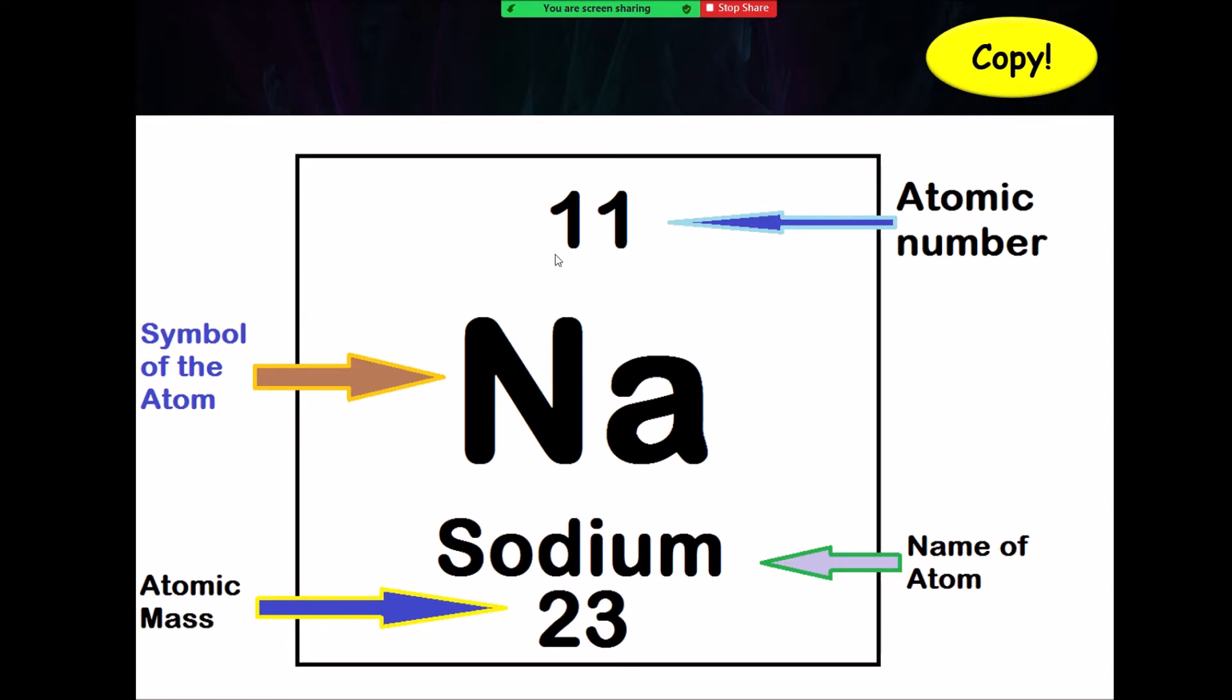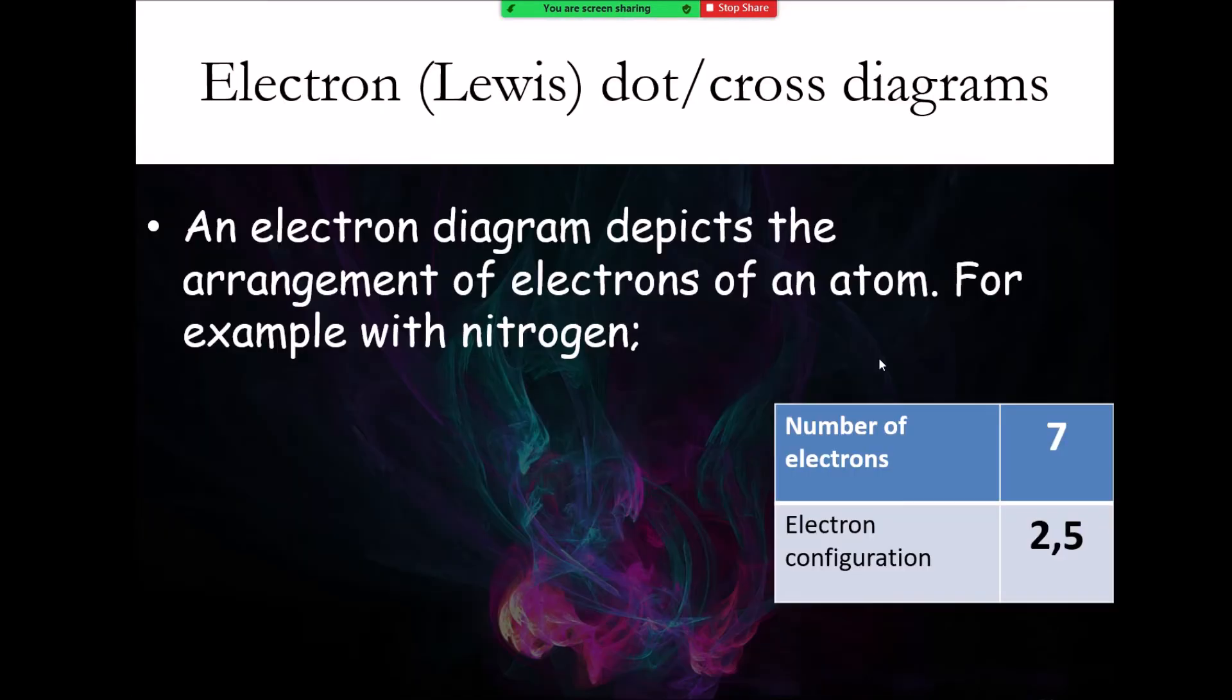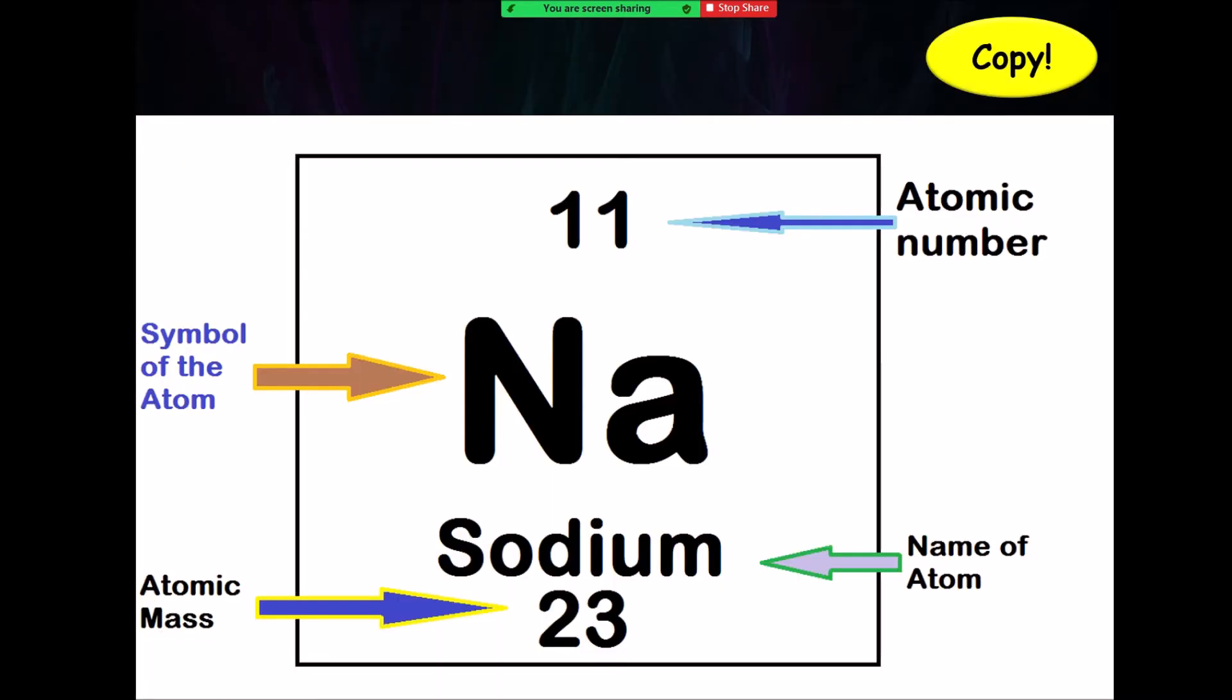One of the things I need you to understand is how to read a periodic table. You probably know this, so just good to give you a refresher. On a periodic table, there's four things to look at. The top number of that periodic table, that's called the atomic number. That essentially tells you how many protons and electrons you have. Here with sodium, I have atomic number of 11. That represents that sodium has 11 protons and 11 electrons. Na is the shorthand symbol to represent the element. The actual name of Na is sodium.